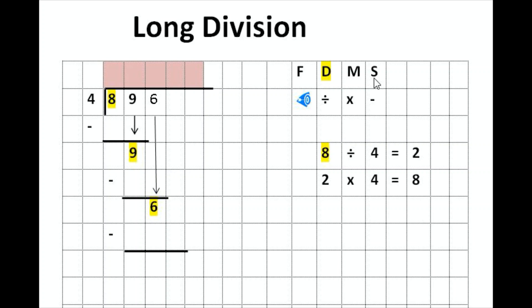Why do we need to subtract? In order to find out how many times 4 can go into these focus numbers — will it go exactly, or are there going to be any remainders? When we subtract, we find out whether there are going to be any remainders. Because 4 can't always go into these numbers an exact number of times. Let's get started and then you will understand more about dividing, multiplying, and subtracting.